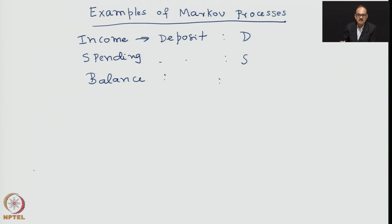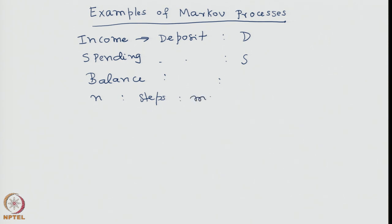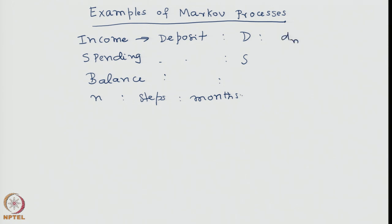The balance is basically an accrued quantity — the net of what remains after several months. We have N steps, which are actually months. Let us say bank balance is declared once a month. We ignore interest and all other issues. The random variable D has realization D_n in the nth month. Similarly, spending has realization S_n in the nth month, and bank balance B has realization B_n in the nth month.